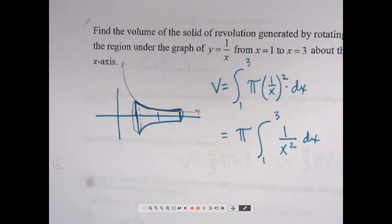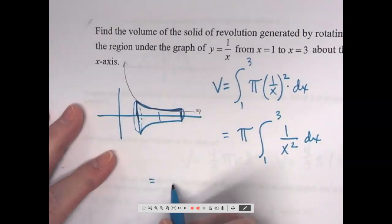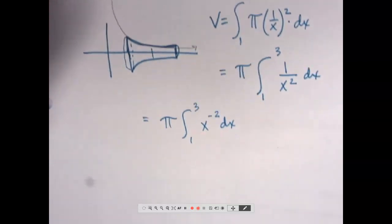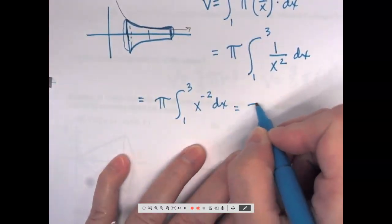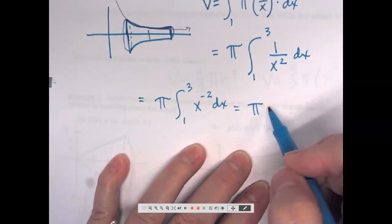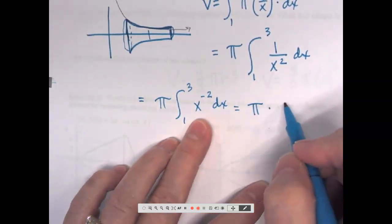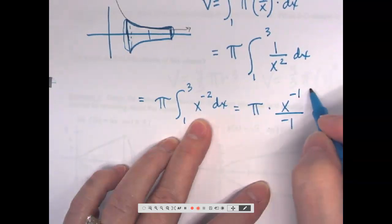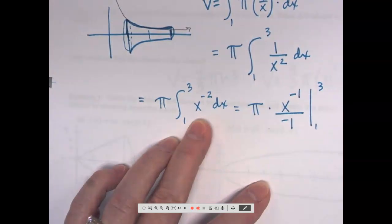Antiderivative of that, what would I do? Rewrite it first. So let's make it x to the negative 2 dx. So now I can do the antiderivative. Pi is still out front. Add 1 to the exponent. It becomes negative 1 divide by new exponent from 1 to 3. Well, if I divide by negative 1, that just means there's a negative out front.